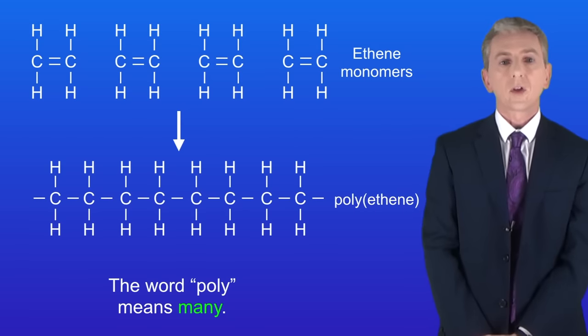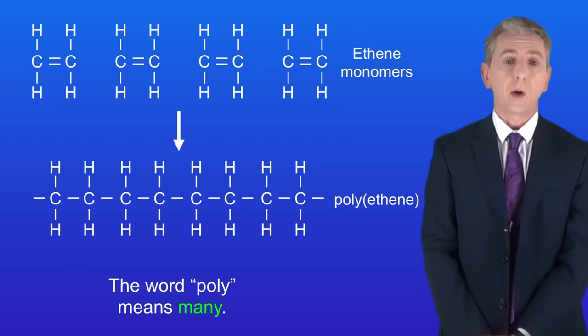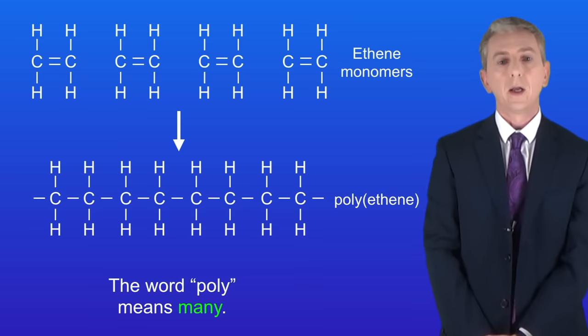Now students sometimes ask what happens at the ends of the polymer, but at GCSE you're not required to know that. Okay, now scientists have a shorthand way of showing the structure of a polymer, and that's called the repeating unit. We're going to look at that now.